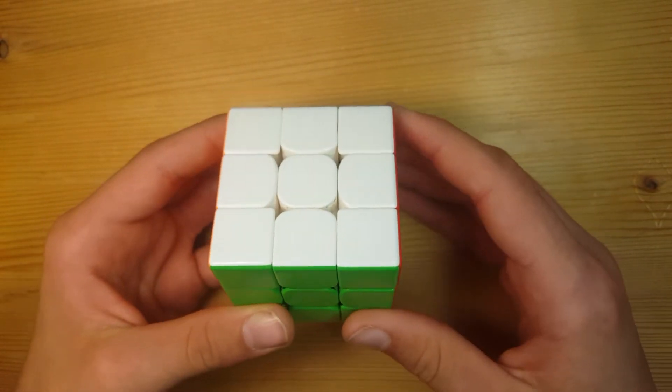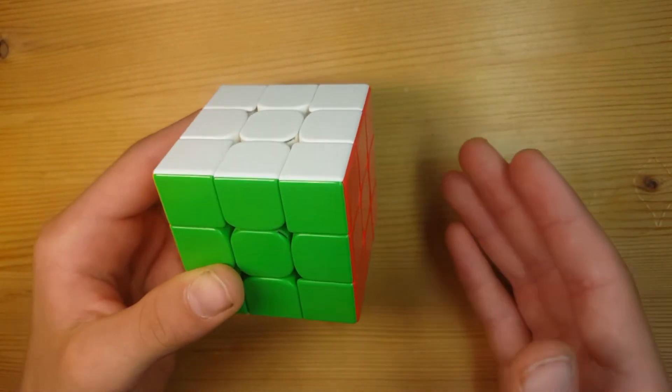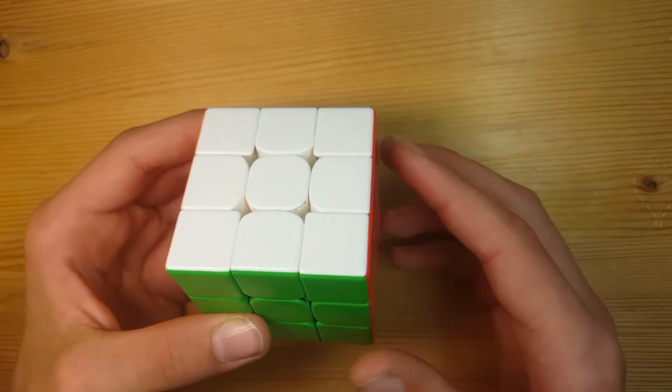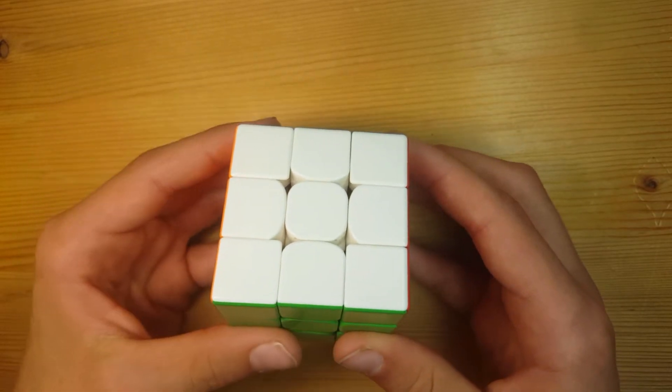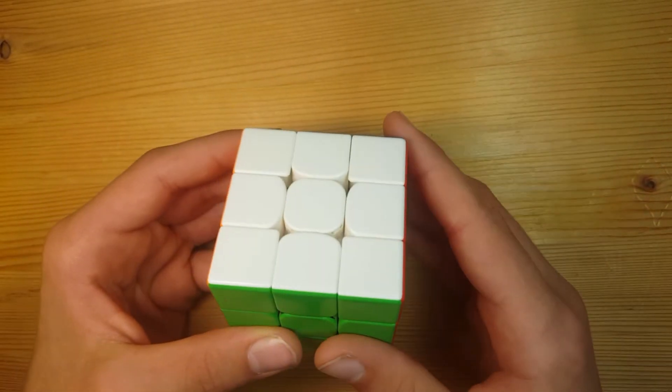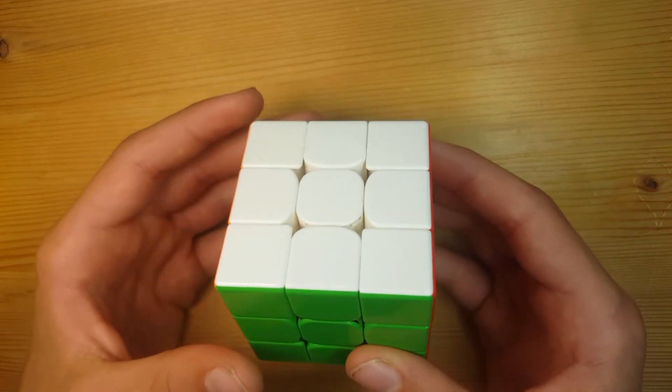2LOOK PLL is just like 2LOOK OLL. Instead of doing a lot of algorithms with beginner PLL, all you have to do is two. If you want to speed solve the Rubik's Cube, you should definitely learn 2LOOK PLL. Ideally you would learn full PLL in the future, but 2LOOK PLL is a good thing to start with.